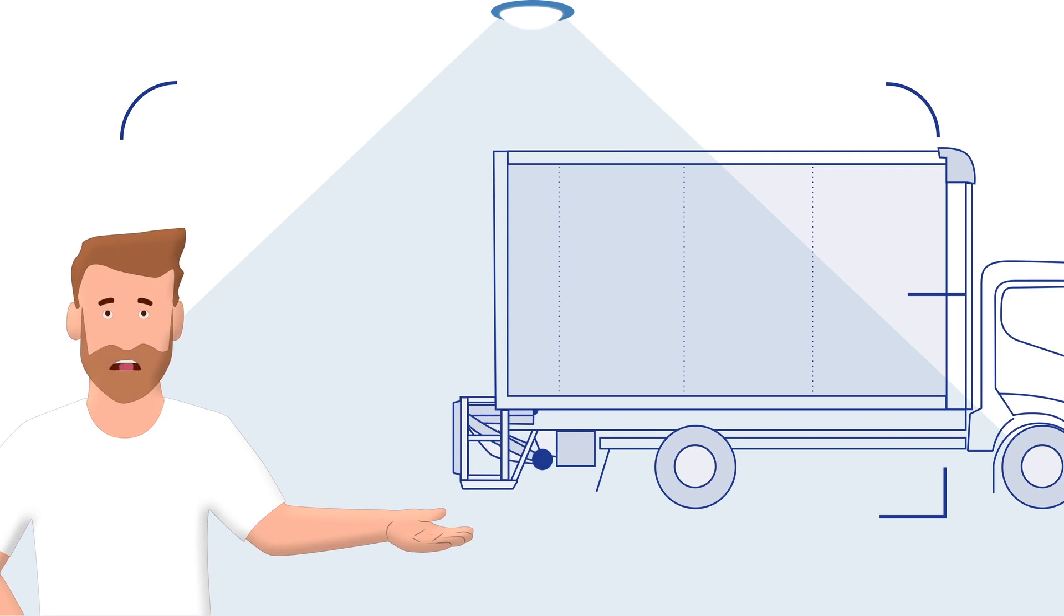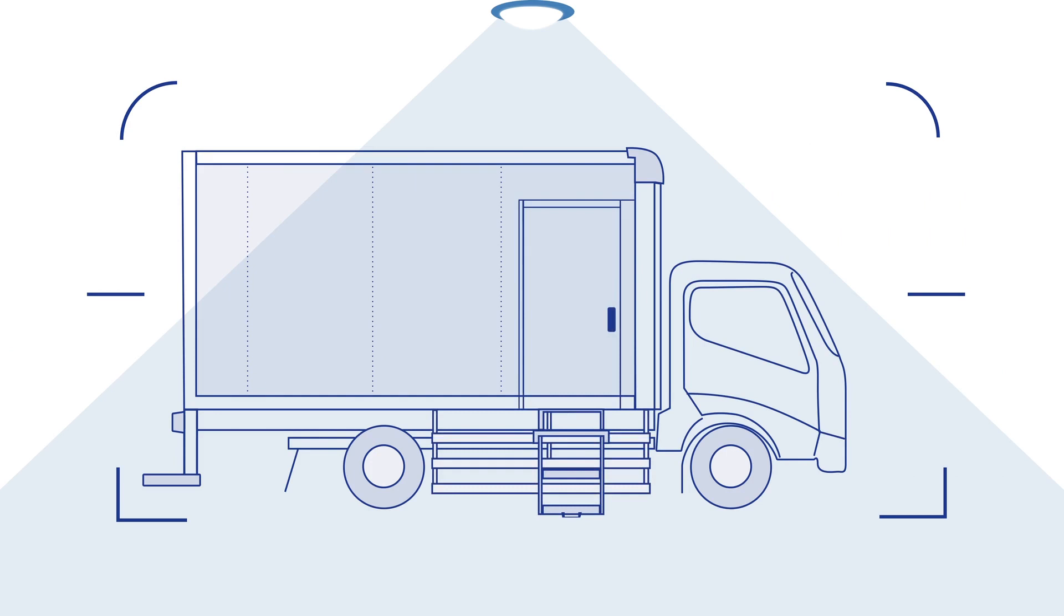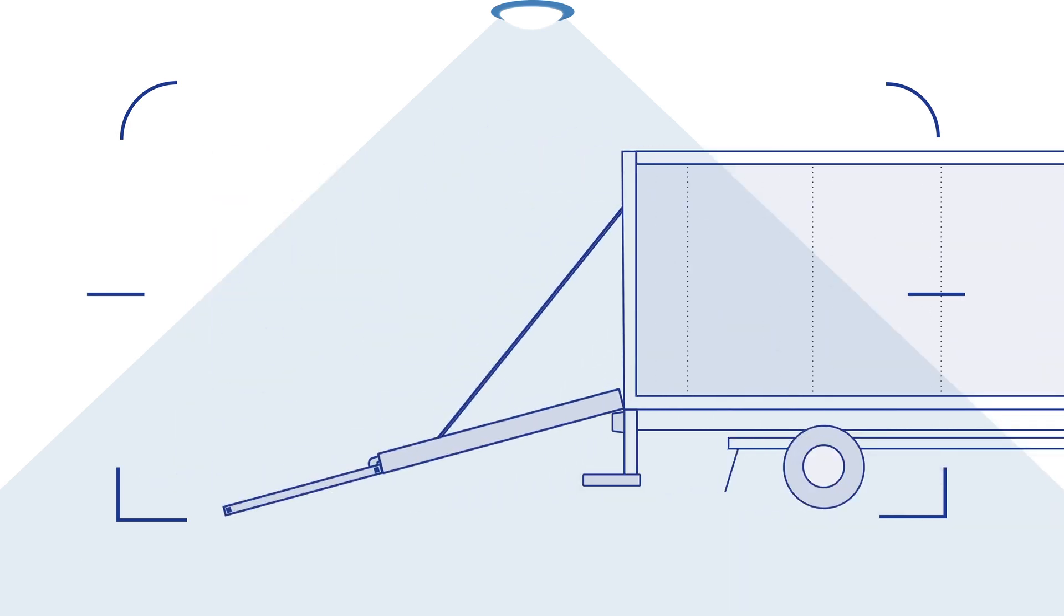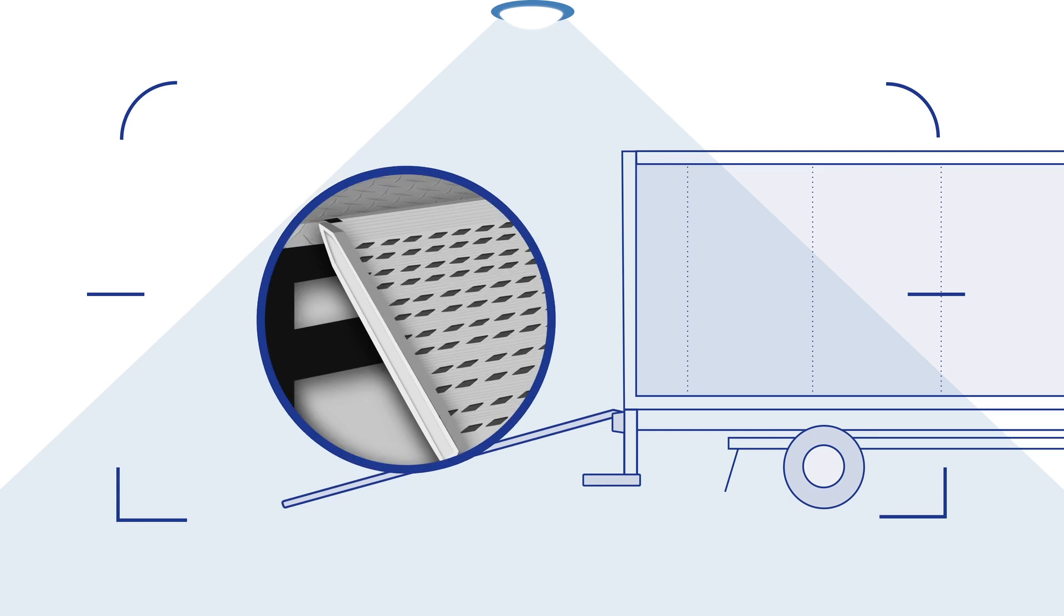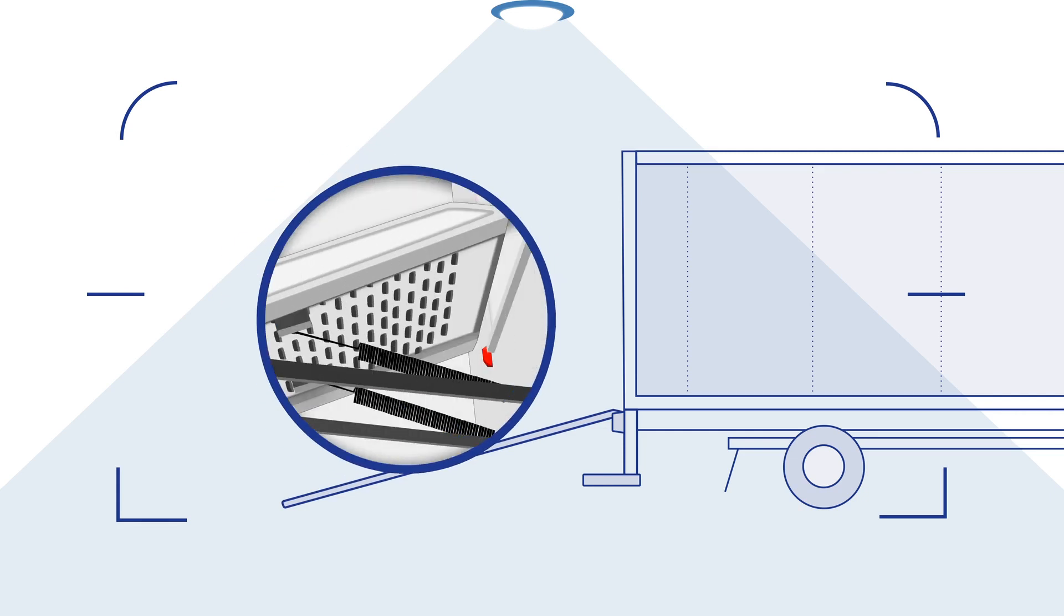And if you don't need a liftgate, you can choose from a variety of bumper options, including the standard DOT underride and step bumper. Or you can choose folding steps. Or even our ProScape ramp or walk ramp options, which also come standard or ventilated and with spring assist for easier operation.